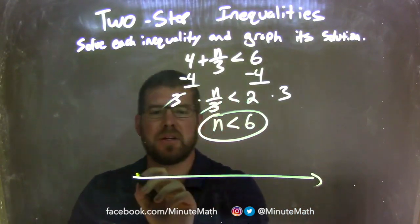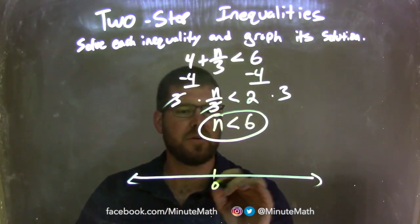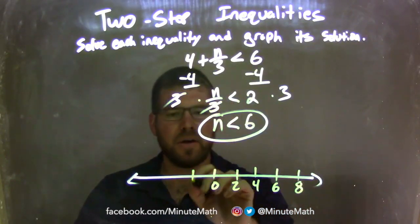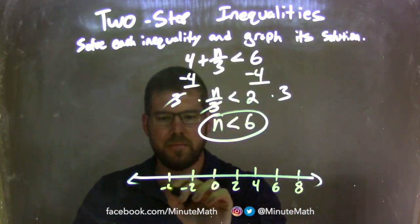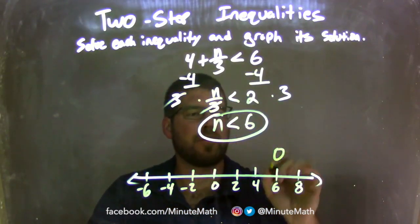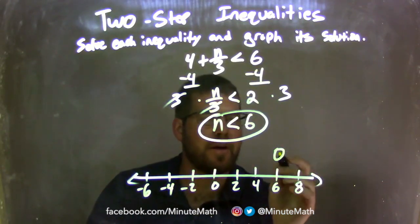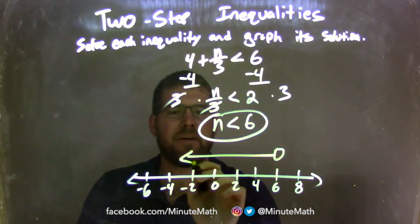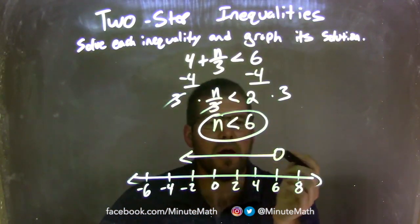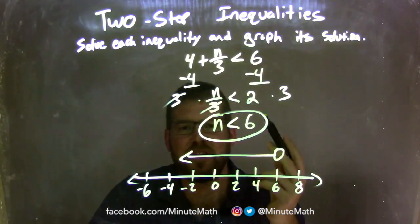Now I make my number line to match it up. Going by 2s: 0, 2, 4, 6, 8, and negative 2, negative 4, negative 6. If N is less than 6, we have an open circle at 6 because it's not equal to, just less than. We put our arrow to the left, and it keeps going forever. Our graph represents the final answer of N is less than 6.